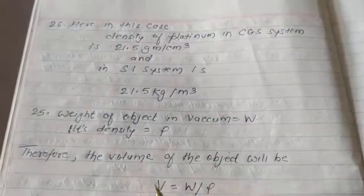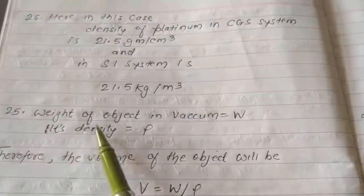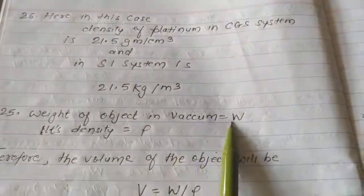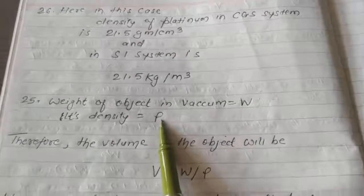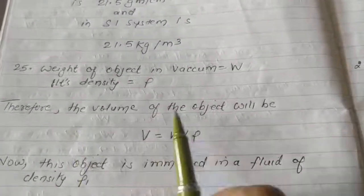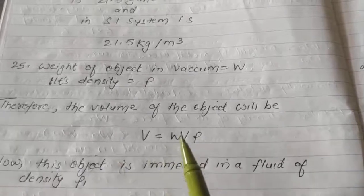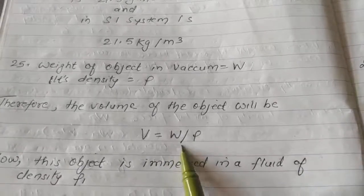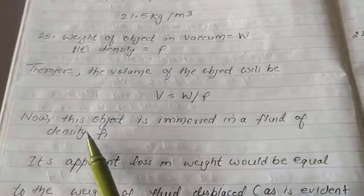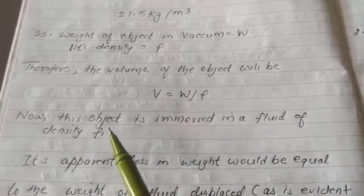Here we will see how to prove that expression. Weight of object in vacuum is equal to W. Its density is rho, therefore the volume of the object will be V, it is volume is equal to weight upon density.